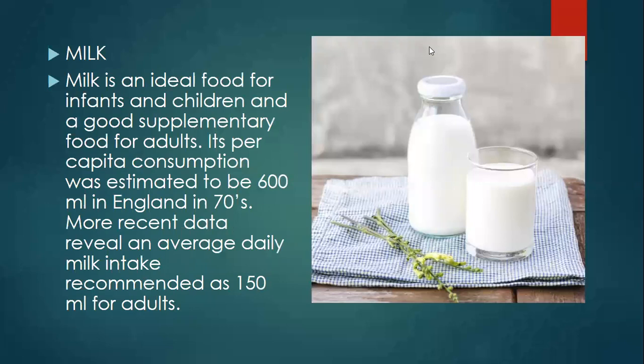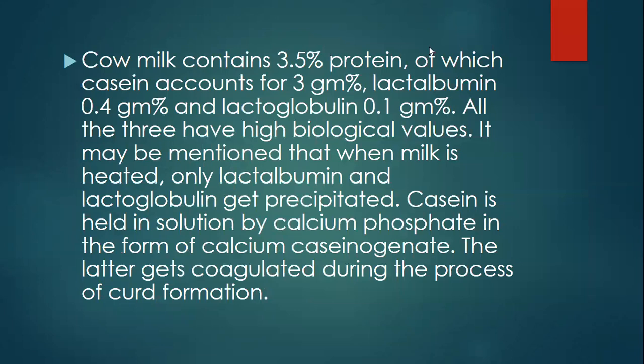First, it is milk. Milk is an ideal food for infants and children and a good supplementary food for adults. Its per capita consumption was estimated to be 600 ml in England in the 17th century. More recent data review an average daily milk intake recommended as 150 ml for adults. Cow milk contains 3.5% protein, of which casein accounts for 3%, lactalbumin is 0.4%, and lactoglobulin 0.1%. All three have high biological values.